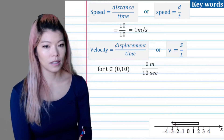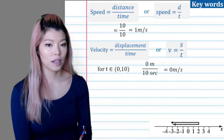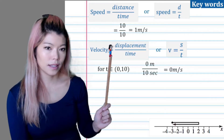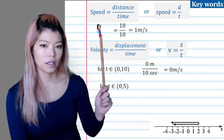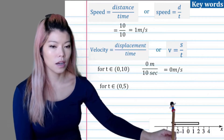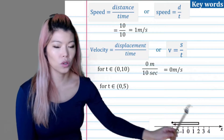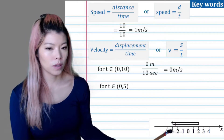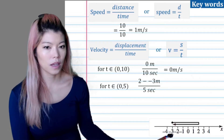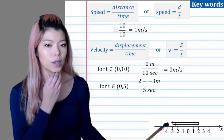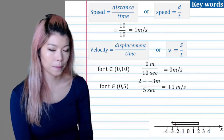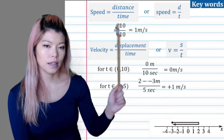Her velocity between zero and ten seconds is zero meters per second. There's one more example: between zero and five seconds, she walks from negative three to positive two, so the displacement is two minus negative three, which equals five, over five seconds. For between zero and five seconds, the velocity is positive one meter per second.